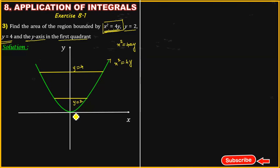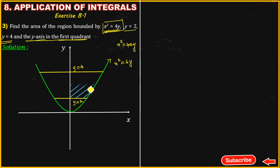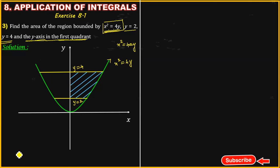The total area in the first quadrant is dependent on the y-axis for this particular region. The limits are y equals 2 and y equals 4.